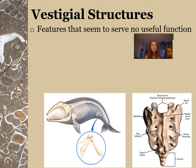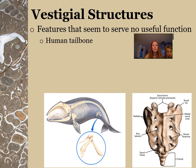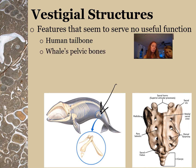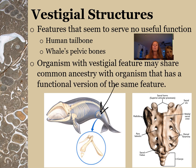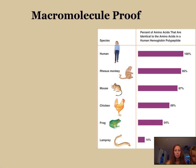Vestigial structures are features that no longer seem to have a useful function. For example, we have tailbones but no tails. Whales have tiny hind leg bones — pelvic bones — even though they don't have legs, as shown in the picture. Even though these don't serve a function anymore, they were there for a reason at one time. We believe organisms with vestigial structures shared a common ancestor with organisms that have those structures.